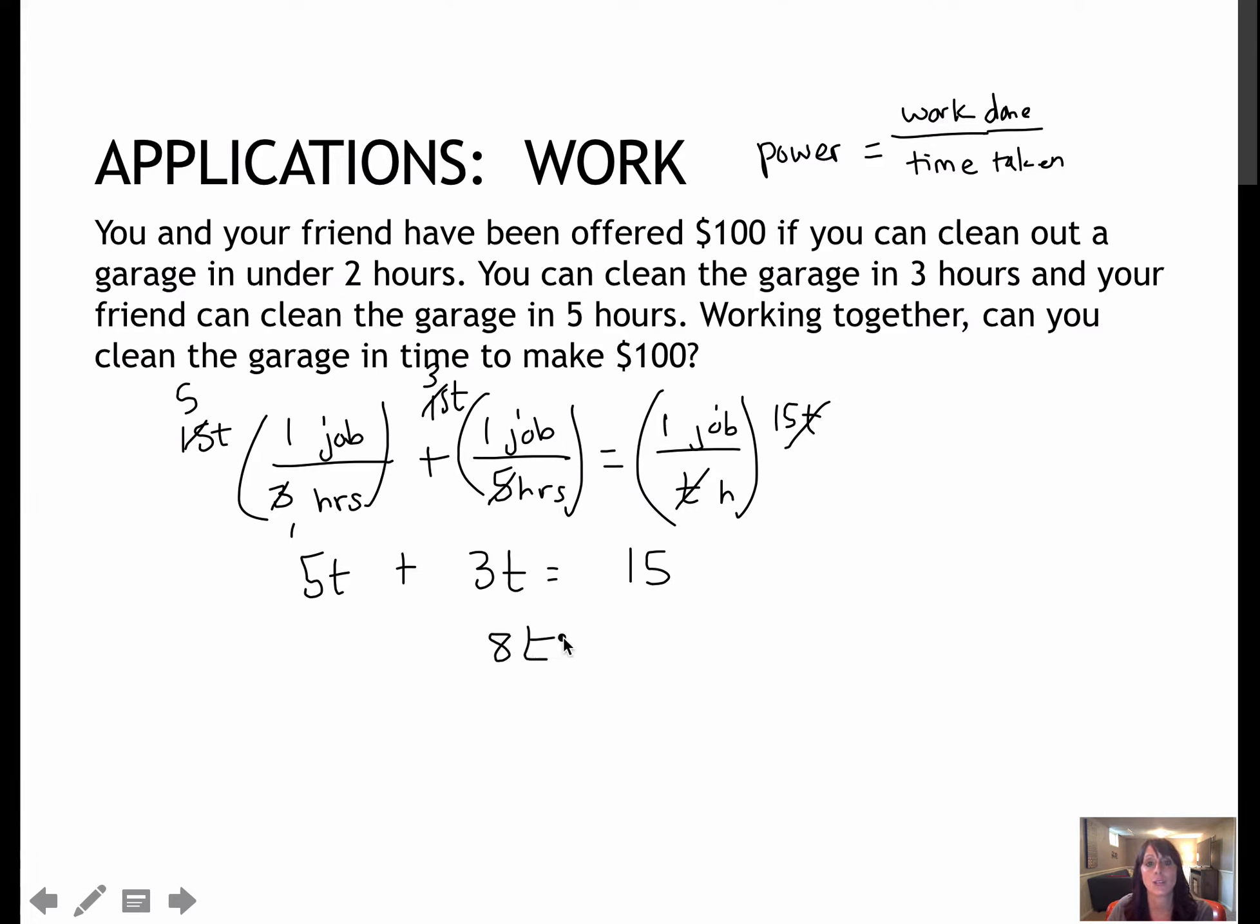5T and 3T gives me 8T. Dividing by 8, I get 15/8 or 1 and 7/8 hours. So my friend and I working together gives me a time of 1 and 7/8 hours. Can we clean the garage in enough time to make our $100? Yes, we can, because 1 and 7/8 hours is under 2 hours.